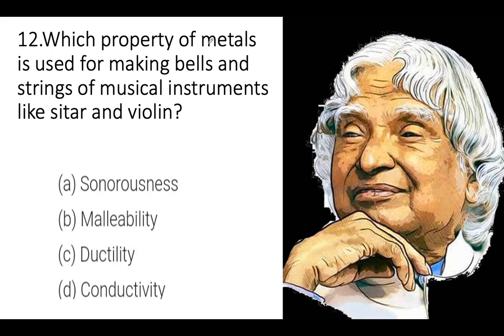Twelfth question: Which property of metals is used for making bells, strings, and musical instruments like sitar and violin? Options are Sonorousness, Malleability, Ductility, or Conductivity. Conductivity means like copper conducting electricity. Malleability and ductility are different properties. Sonorousness is the property used for making musical instruments like sitar, violin, bells. The answer is A, Sonorousness.